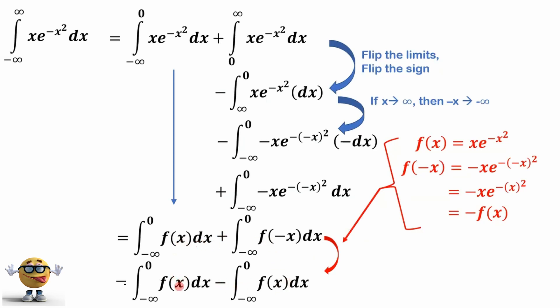So because of that, if they're identical, you're subtracting identical things. They equal zero.